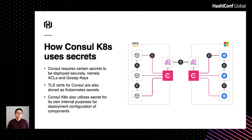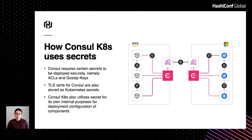So how does Consul on Kubernetes utilize secrets? Consul utilizes a number of different secrets for secure communication or configuration of the Consul cluster. Some examples include ACL tokens as well as gossip encryption keys, which are used to authenticate and secure encryption communication between agents. We also leverage TLS certs for RPC communication from client to server, and there are instances where configuration is stored as a Kubernetes secret to properly deploy and configure components within Consul on Kubernetes.